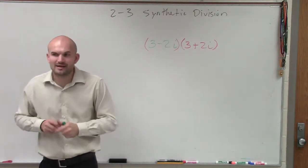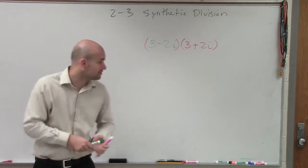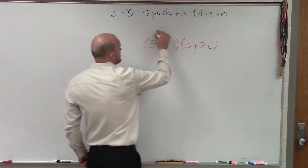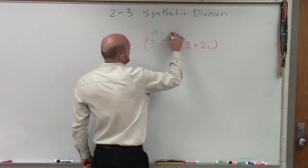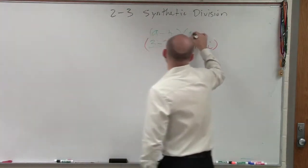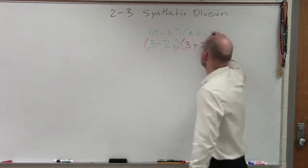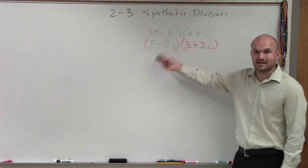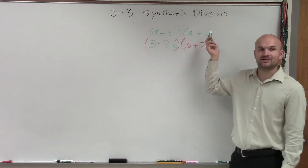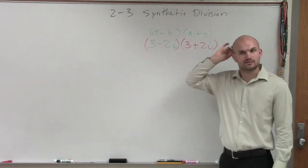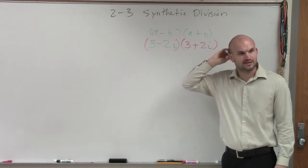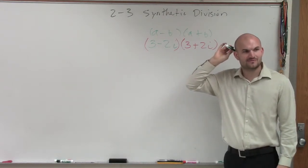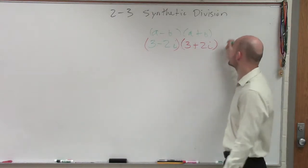Now, when multiplying this, you should notice that this is in the form of (a minus b) times (a plus b), where a is the same and b is the same. And (a minus b)(a plus b) is part of what factoring technique? The difference of two squares.